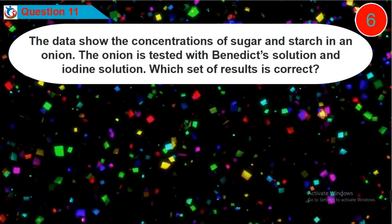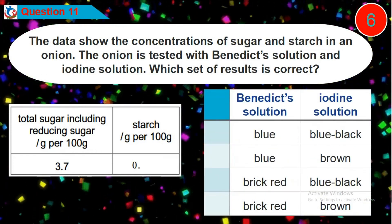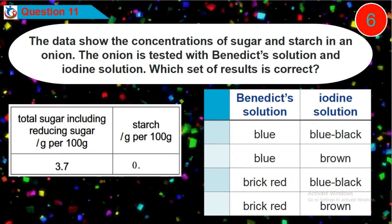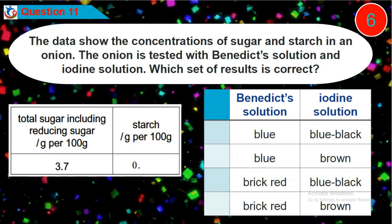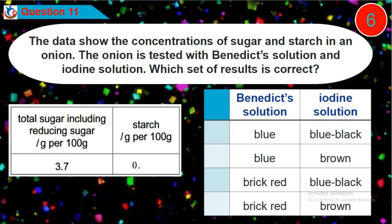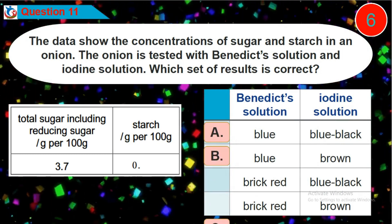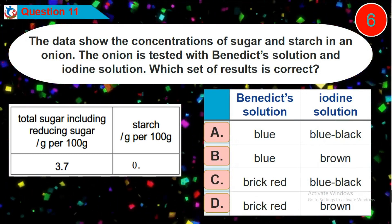Thank you. Question 11. The data shows the concentrations of sugar and starch in an onion. The onion is tested with Benedict solution and iodine solution. Which set of results is correct? Is it option A, B, C or D?